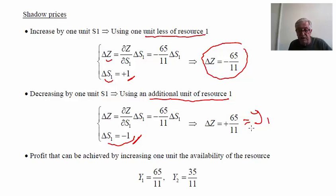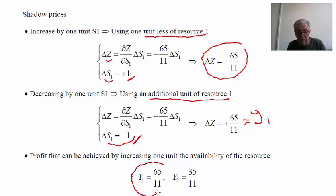The shadow price Y1 represents what I can earn if I increase the availability of resource number 1 by one unit. It also represents the opportunity cost — essentially what I am losing by not increasing the availability of the resource. Performing the same analysis, we can also obtain the shadow price of resource number 2.